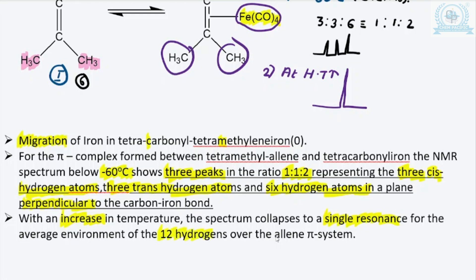With the increase of temperature the spectrum collapses into a single line — a single resonance for the average environment — because it is no longer possible to distinguish the non-equivalent protons on the time scale of the NMR spectrometer.